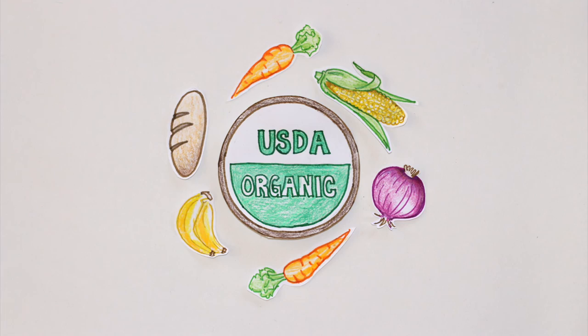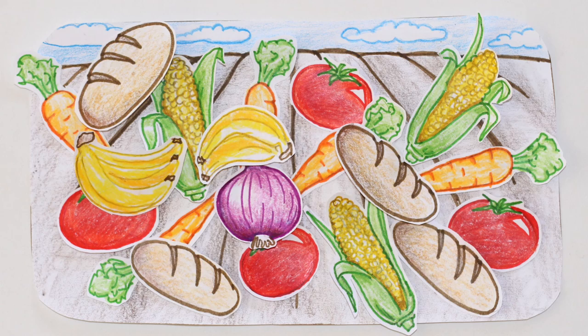But the difference maker for wildlife doesn't really come down to conventional versus organic. It's mostly about yields, or the amount of crops grown on a given plot of land.